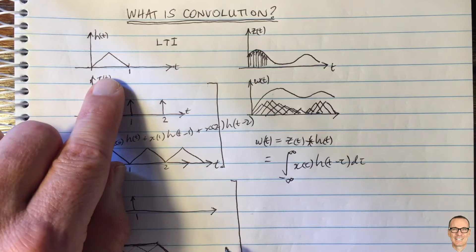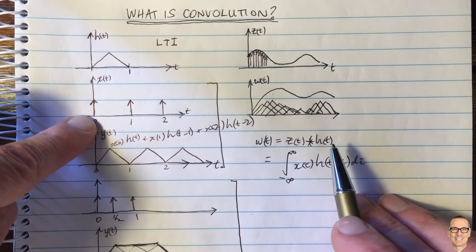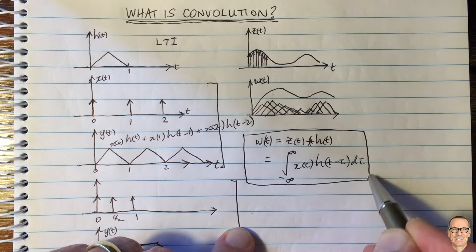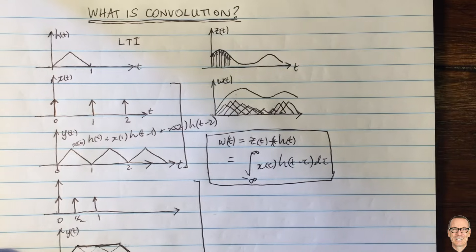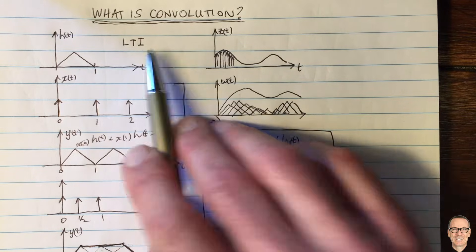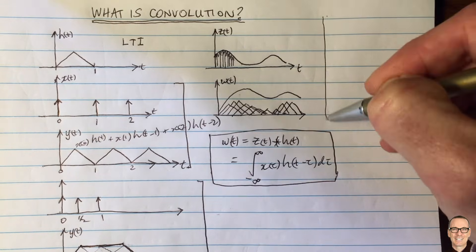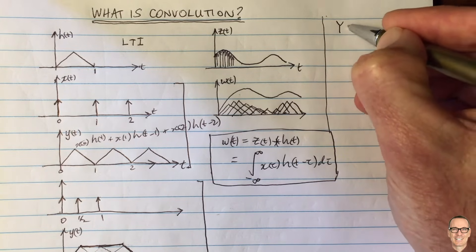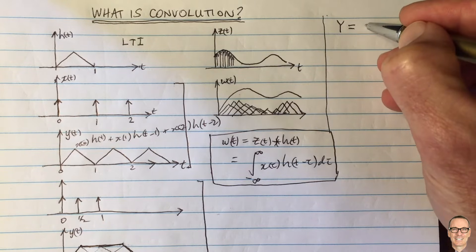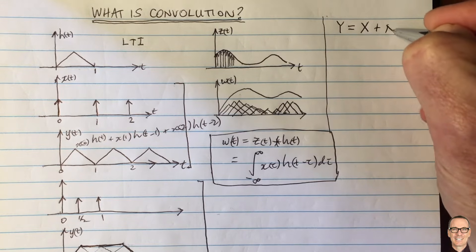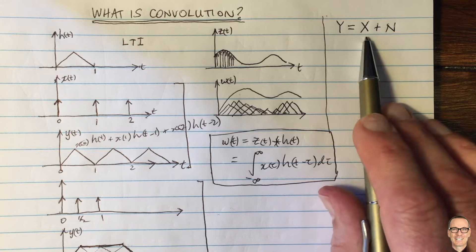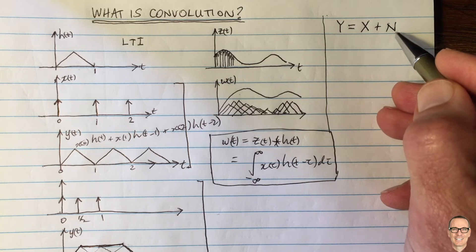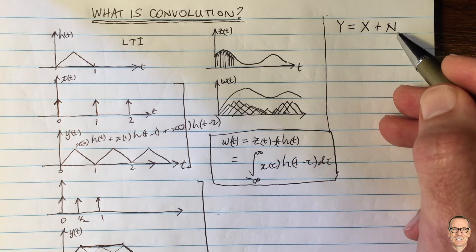Convolution doesn't just happen for linear time invariant systems. As I said, it's a general operation that takes two waveforms or two functions and produces a third according to this equation. So let me give you one other example of where it comes up — a common example in digital communication systems. Consider a digital communication system where the output signal y equals the input x plus noise n. The input x is either plus or minus one in a binary digital communication system, and the noise is typically Gaussian noise.